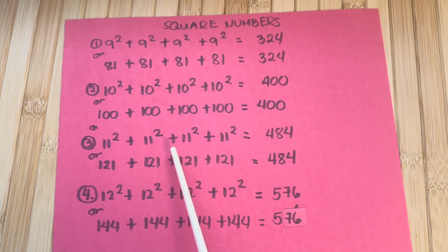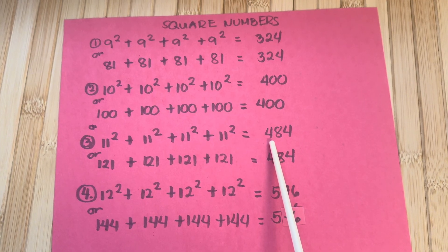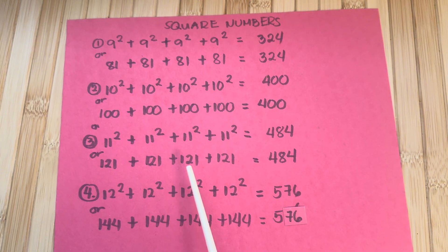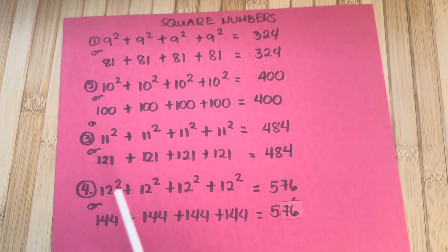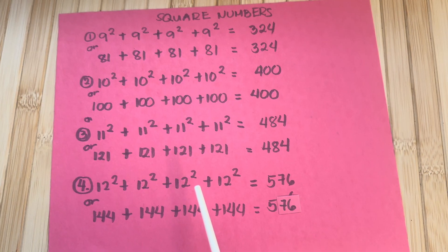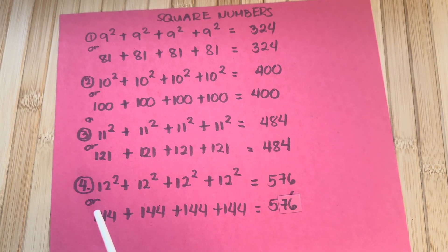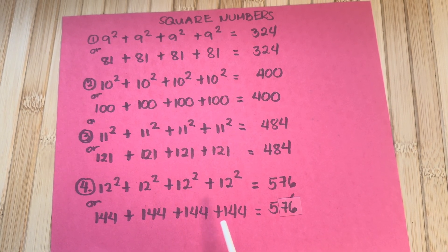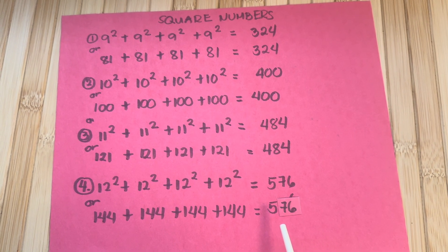11 squared plus 11 squared plus 11 squared plus 11 squared is equals to 484, or 121 plus 121 plus 121 plus 121 is equals to 484. Next: 12 squared plus 12 squared plus 12 squared plus 12 squared is equals to 576, or 144 plus 144 plus 144 plus 144 is equals to 576.